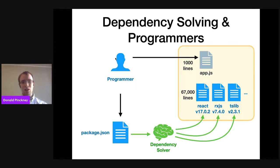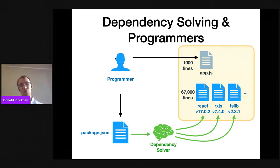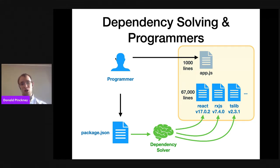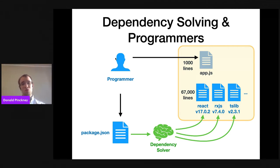The programmer in the top left will typically do two things: write their normal application code — maybe a thousand lines of JavaScript — and also write down their package JSON file. That gets fed into NPM, which solves the dependencies and produces, in this example, like 57,000 lines of code. Those all get linked in to build the final product, which the programmer can deploy in production. So we have one to two orders of magnitude difference between the code the programmer writes and what the dependency solver manages.